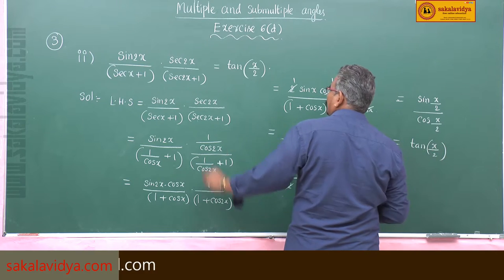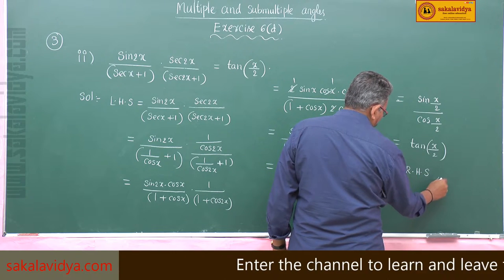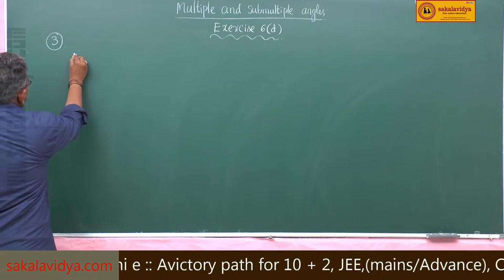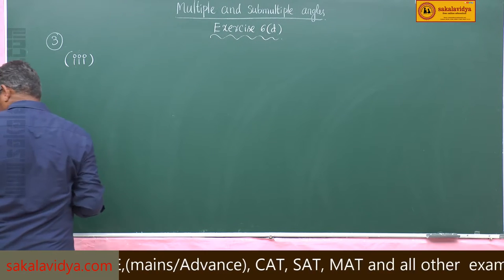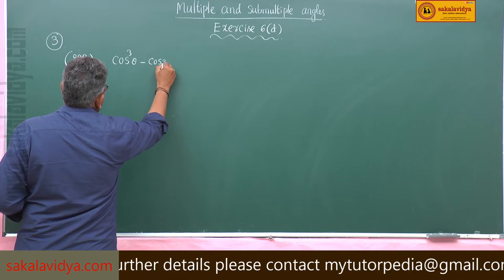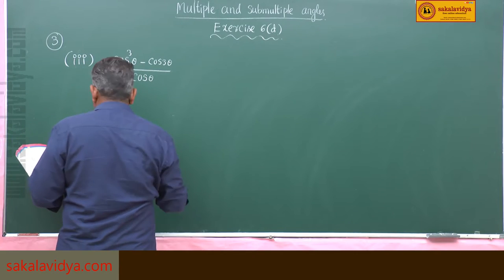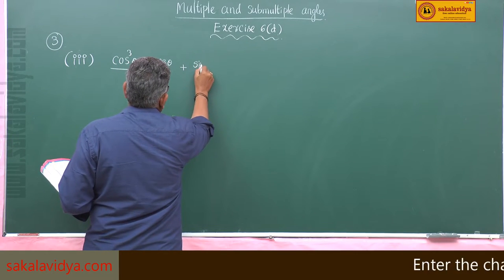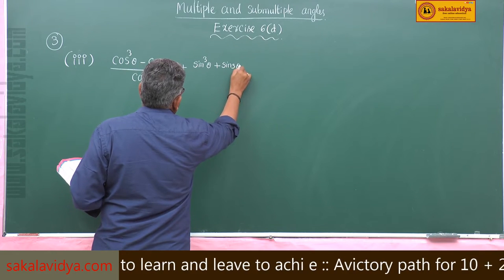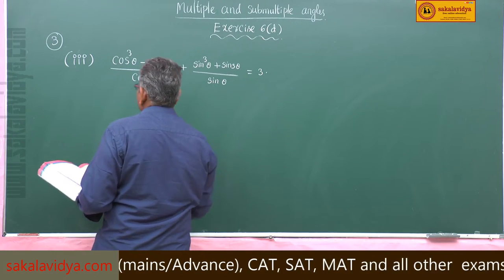Just check the problem — what has to be proved is tan(x/2). So this is the RHS, hence it is proved. Now the third problem: prove that (cos³θ − cos3θ)/cosθ + (sin³θ + sin3θ)/sinθ equals 3.